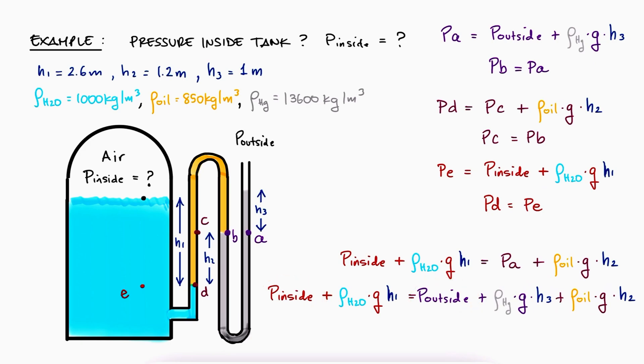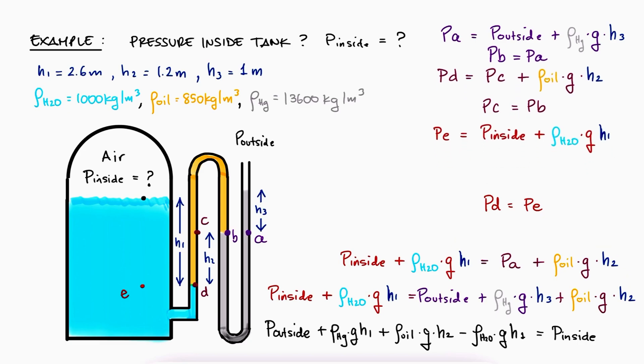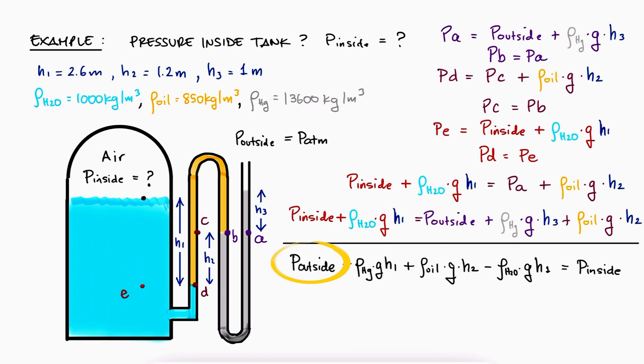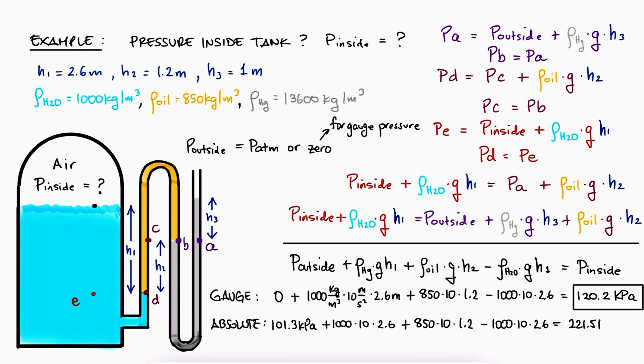Alternatively, we just start at P outside, add a column of mercury, add since we're moving downward, add the column of oil, and subtract the column of water, subtract since we're moving upward, to find P inside. With this, we can either find the absolute pressure inside the tank if we say P outside is the atmospheric pressure, or we can find the gauge pressure inside the tank if we say P outside is zero. Regardless, we substitute the values and find the pressure to be roughly 120.2 kPa or 221.5 kPa.